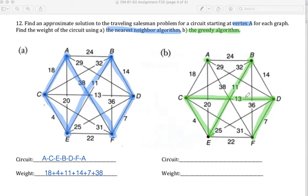After 13, the next shortest segment is 14. But we cannot use 14 because that would give us three lines, three edges into D. That is not permissible. One edge in, one edge out. After 14, the next is 18. I cannot use 18 because that would give us three edges connecting to C.